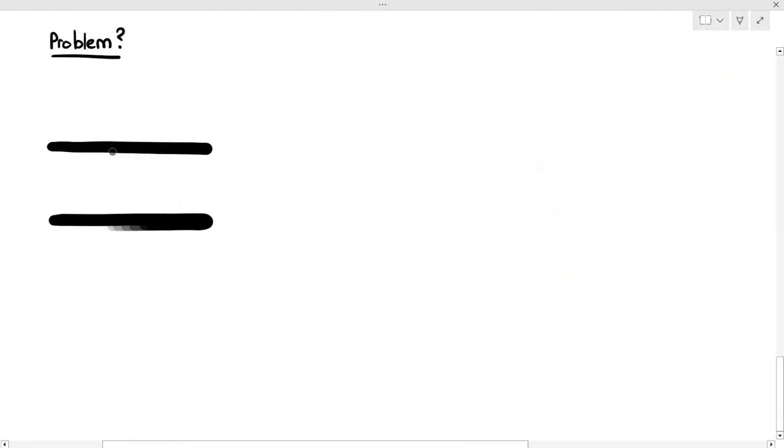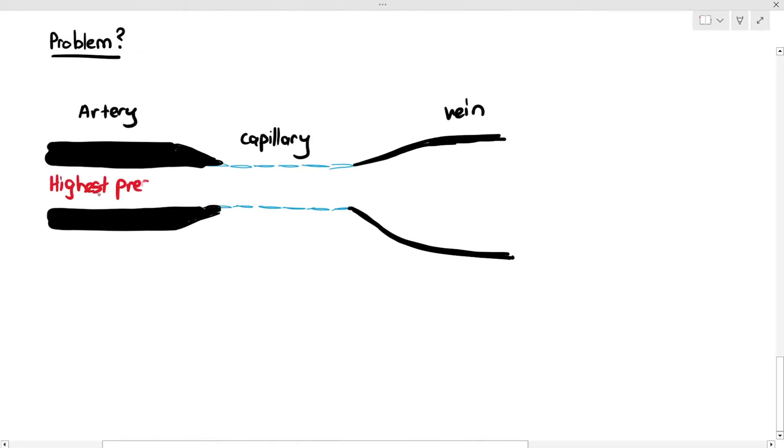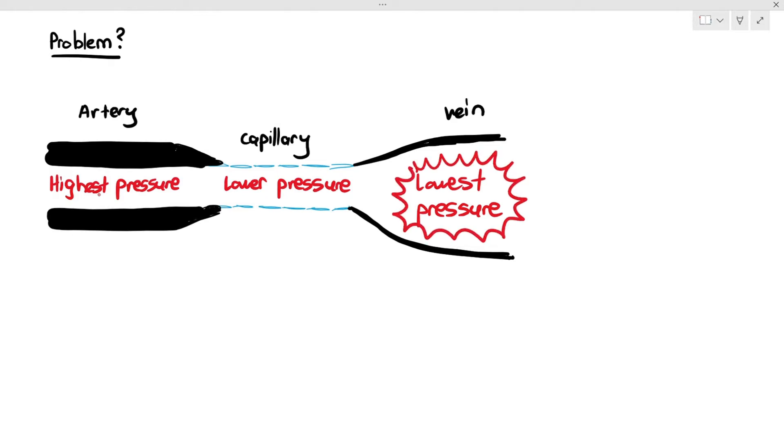Now, there is a problem I want to talk about when we are covering the vein. So, as you can see, I'm just drawing a simple diagram here, an artery, capillary, and vein. Now, I know there are supposed to be arterioles and venules in the middle, but I just want to simplify this diagram. Now, as a reminder, the pressure in the artery is at its highest, and as the pressure goes further away, it becomes lower in the capillary, and when it enters the vein, the pressure is at its lowest.